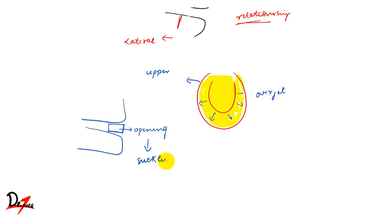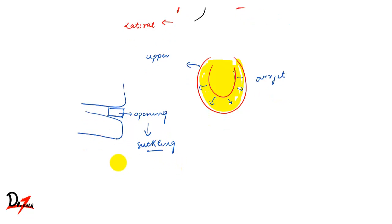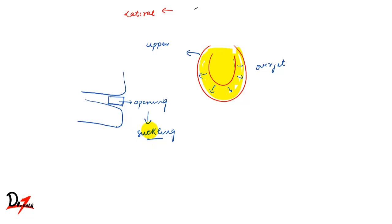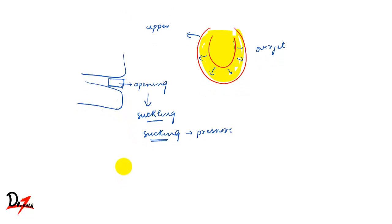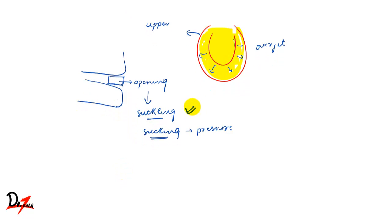There is a difference between sucking and suckling. Suckling is the normal process by which the child takes in milk; it involves muscular activities as well. Sucking just involves creating pressure without the muscles being involved. In suckling, pressure is created and muscles are also involved, which is a better way of feeding — this is what happens in breastfeeding and is beneficial for the child.